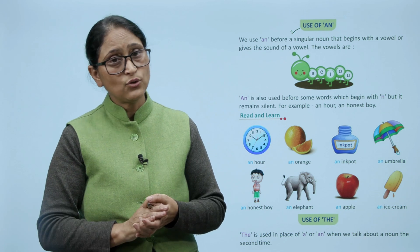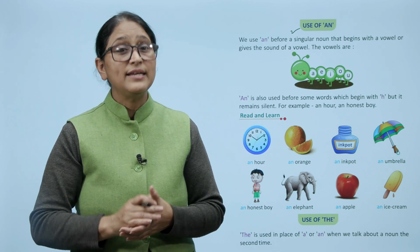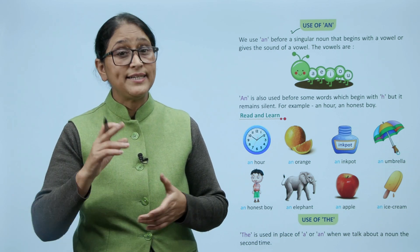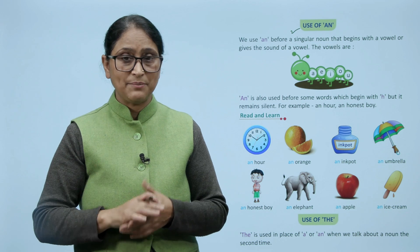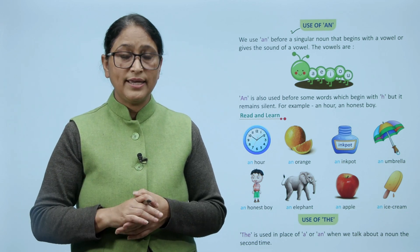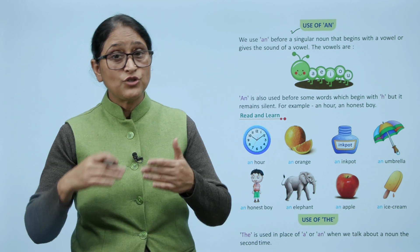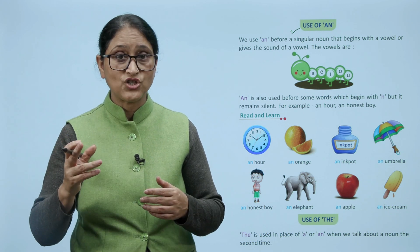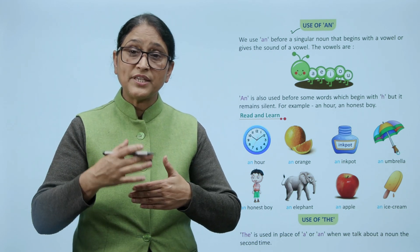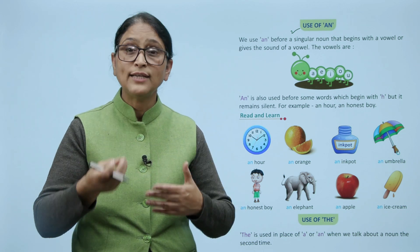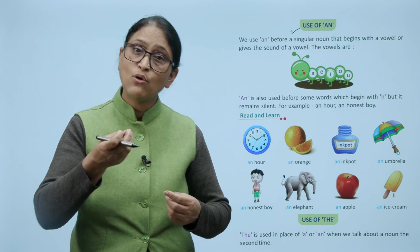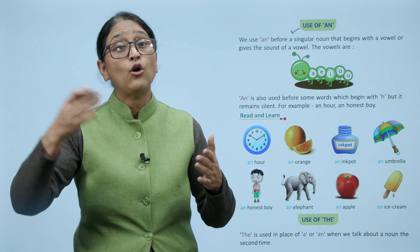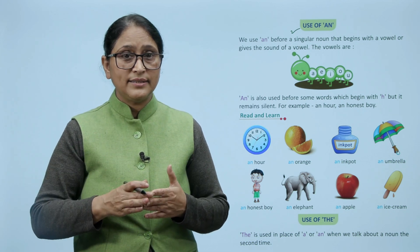Toh us se pehle hum in articles ko use karte hai. An is used before some words which begin with H, but it remains silent. For example, an hour, an honest boy. N ka use kahaan karte hai? Jho kuch aise sound se start hota hai — suppose H se start ho raha hai, consonant H. Lekin ye silent raha hai, toh sound vowel ka produce karta hai. Toh isse pehle hum an ka use karte hai. For example, an hour, an honest boy, an hour.